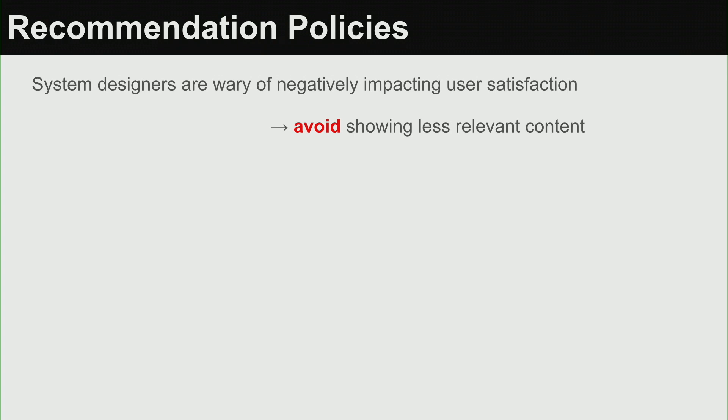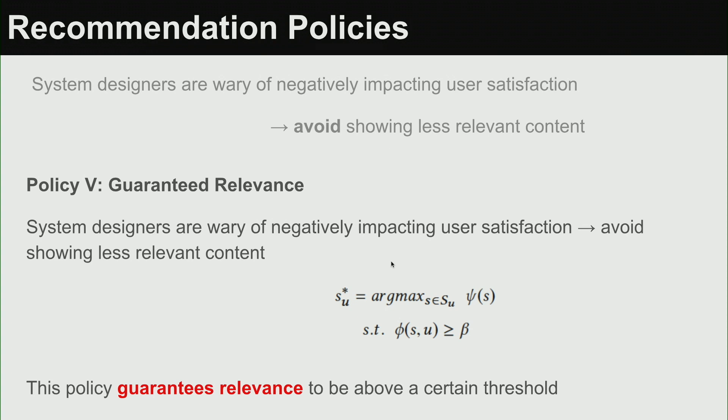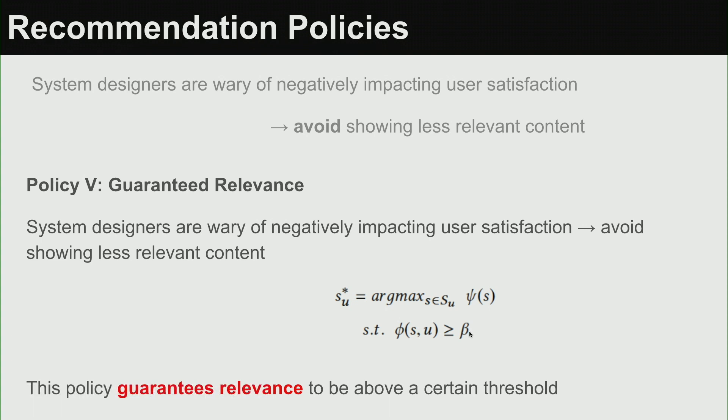Product managers are skeptical of showing less relevant content since it could hurt their metrics. This inspired a guaranteed relevance policy: a simple constraint that relevance will not go below a threshold beta. As long as that guarantee is met, the system can show as fair content as possible. This is like a pact with product teams — guarantee a minimum level of relevance, and above that guarantee maximize fairness as much as possible.